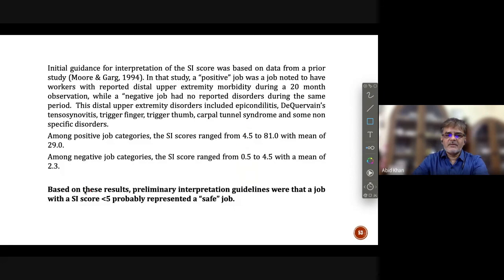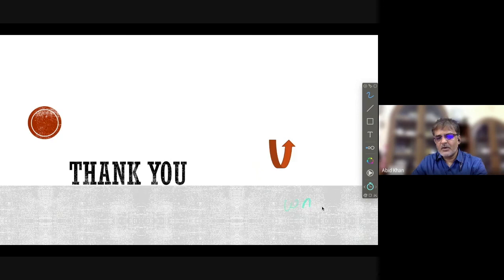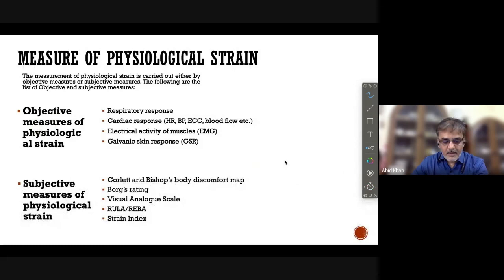Therefore, they finally gave a criteria that based on these results, the strain index score less than 5 probably represents a safe job. So this was only one method which I am considering for the syllabus point of view. There is another method which is called Okra method or OWAS method, but we are not going to consider those methods over here. Now, I will give you some problems on this from the book of Bridger, which you can use for calculating the strain index or RULA or REBA also.